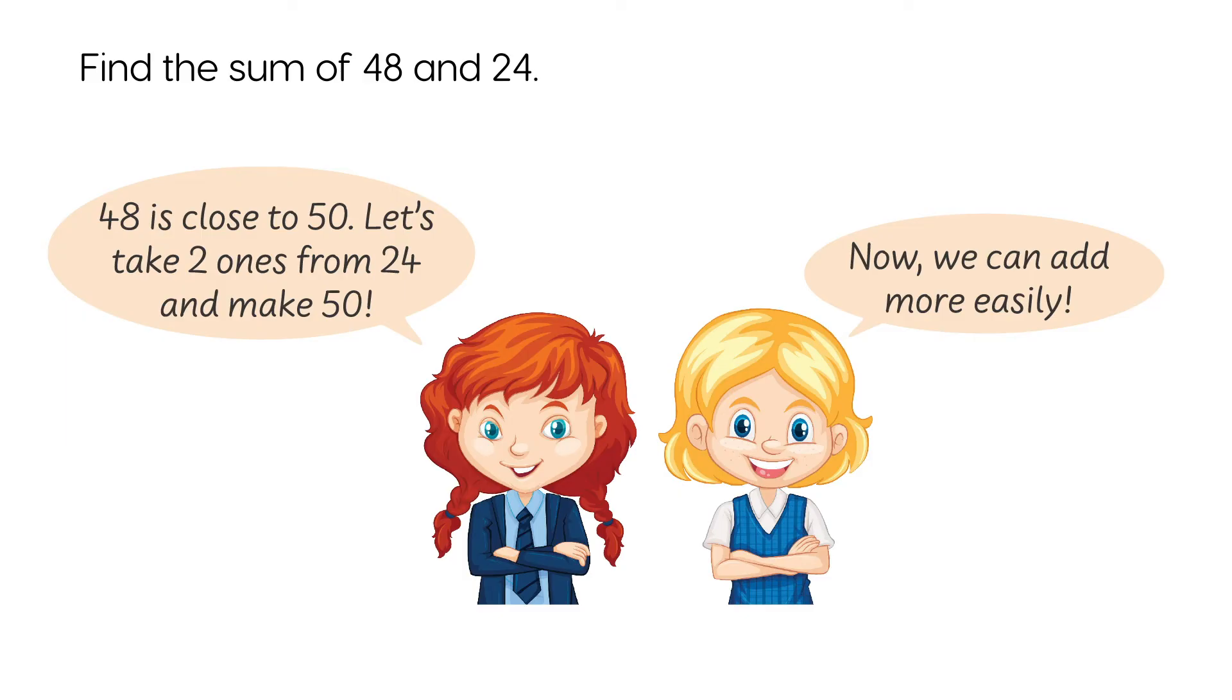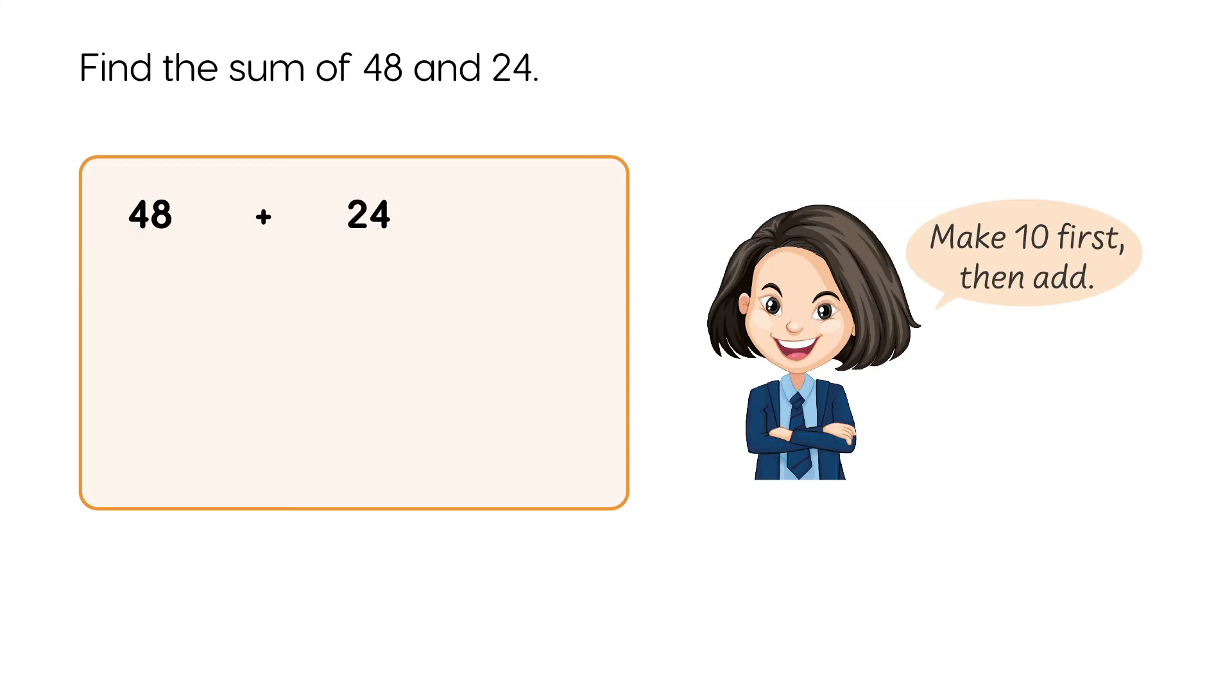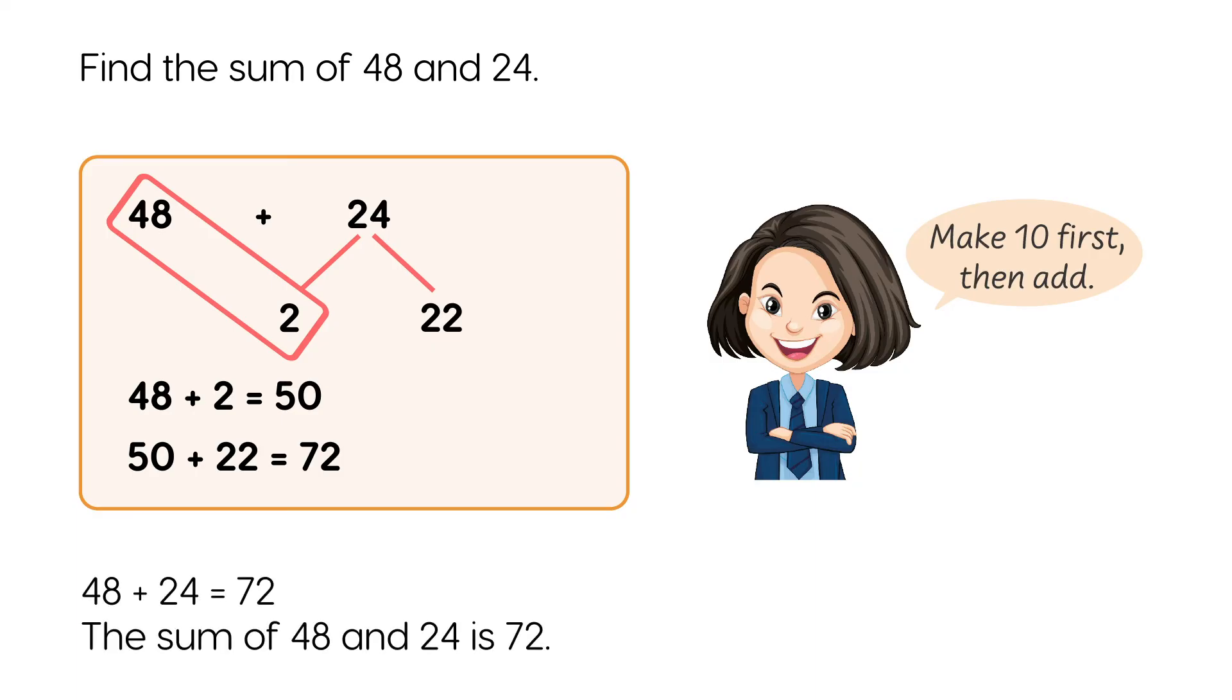Find the sum of 48 and 24. 48 plus 2 equals 50. 50 plus 22 equals 72. 48 plus 24 equals 72. The sum of 48 and 24 is 72.